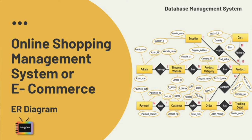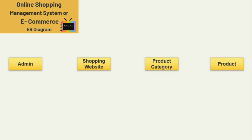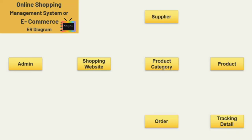An ER diagram for online shopping management is a visual presentation of entities and relationships of an online shopping management or ecommerce database and tables. Here I'm taking nine entities: shopping website, product category, product, admin, supplier, tracking details, order, customer, and payment.